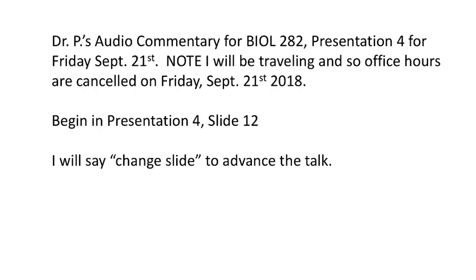Red blood cells will have a variety of different decorations: they'll be decorated with A, or with B, or with both A and B. Or, in the case of an I superscript O homozygote, they will be decorated with neither A nor B, and will only have H substance on the surface. Now let's transition to slide 20 and talk about why these sugars matter.